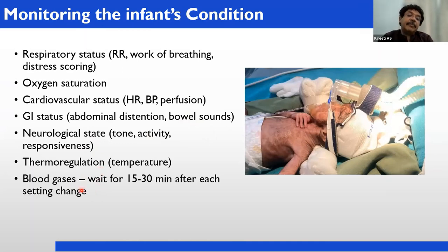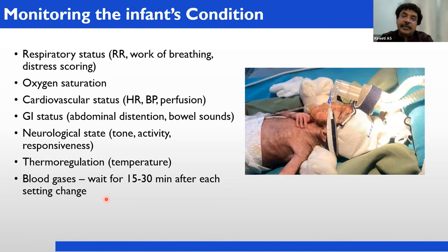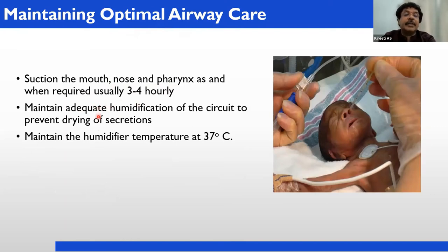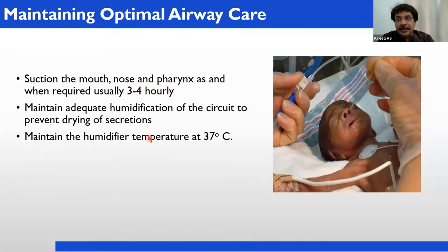If ABG is available, wait 15 to 30 minutes after each setting change before sending a blood gas sample. To maintain optimal airway, suction the mouth, nose, and pharynx as and when required, every third or fourth hour. Maintain adequate humidification of the circuit to prevent drying of secretions — check the water level in the chamber, watch for any condensation or dew drops in the tubes which should not be there. Humidifier temperature should be 37 degrees centigrade.